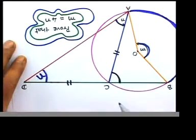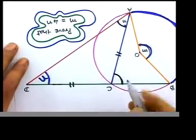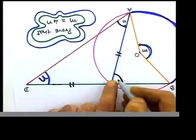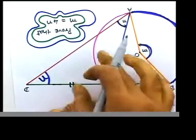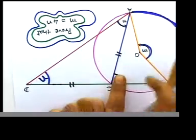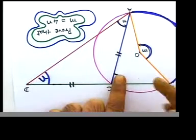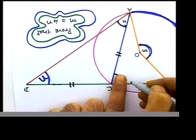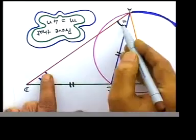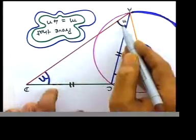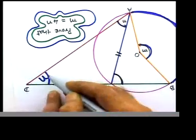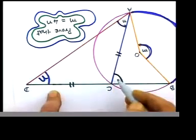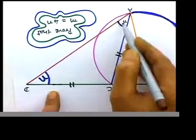The law says exterior angle of a triangle equals the sum of the interior opposite angles — we are not in cyclic quadrilaterals, this is triangles. Exterior angle equals the sum of the two interior opposite angles. We did this in part one: when you add those two you get this one, so that's n plus n.